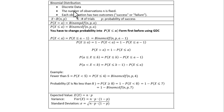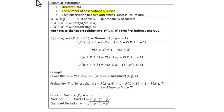Today's video is about binomial distribution. When the data is discrete, the number of observations is fixed, and each observation has two outcomes — success or failure — then you can use a binomial distribution.